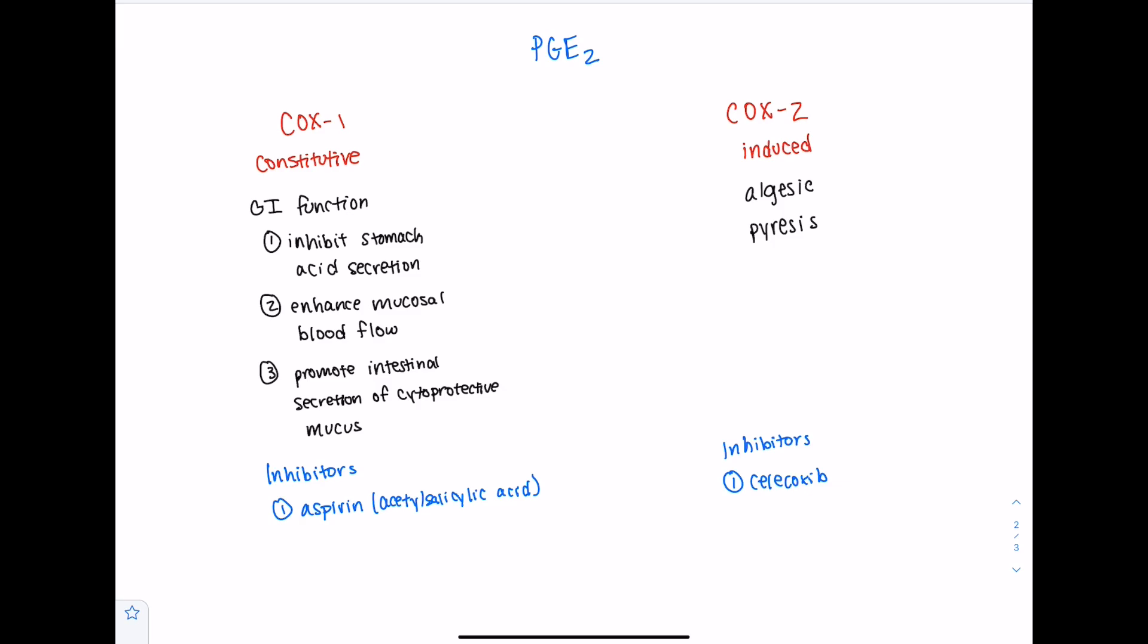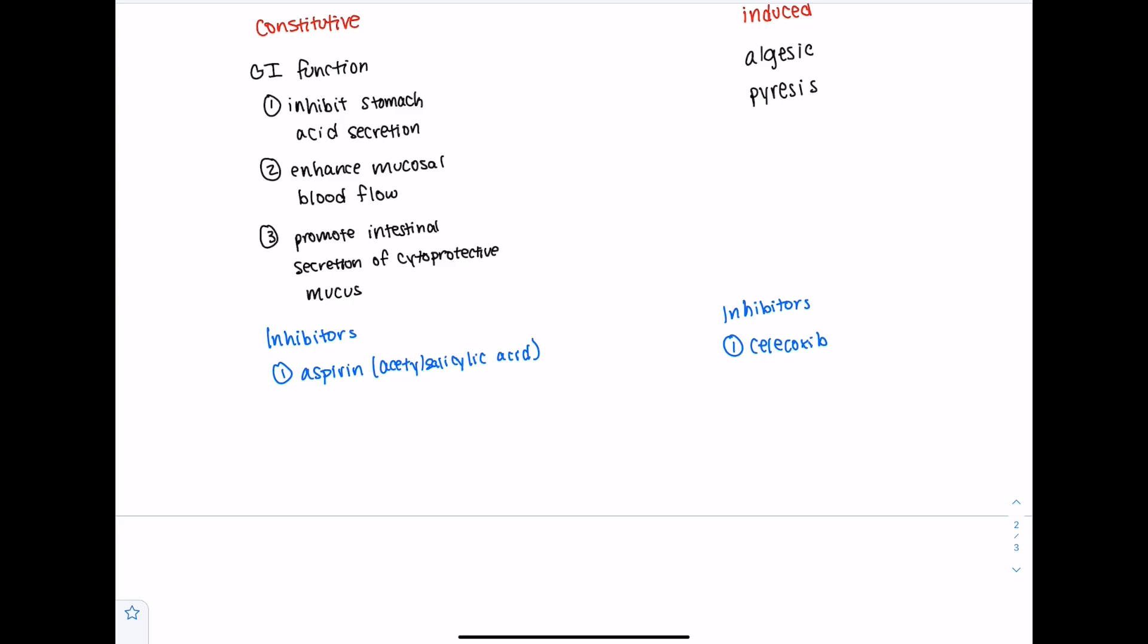But the problem with COX2 inhibitors or celecoxibs is that they can have cardiovascular problems. And there are a lot of different mechanisms that can explain why they have cardiovascular problems. I'm not going to get into those right now. But for now, we can just write that celecoxib can have cardiovascular risk. And then for aspirin, we're going to write GI symptoms.